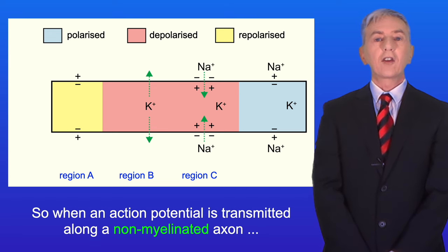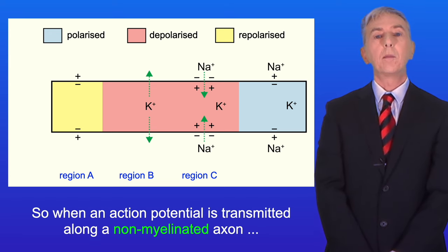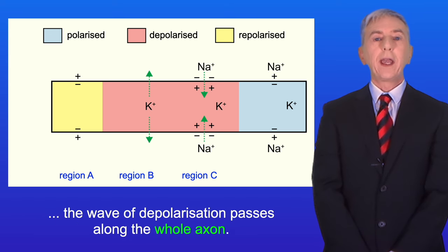So when an action potential is transmitted along a non-myelinated axon, the wave of depolarization passes along the whole axon.